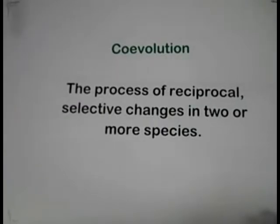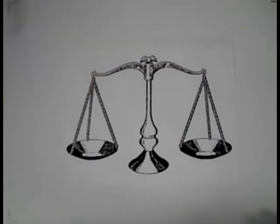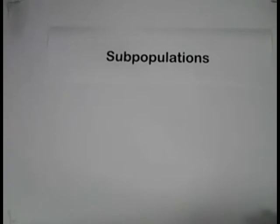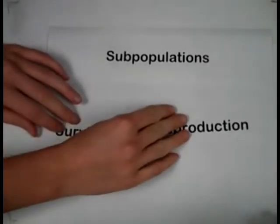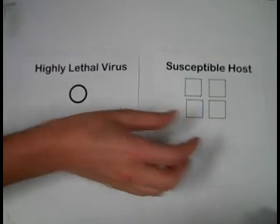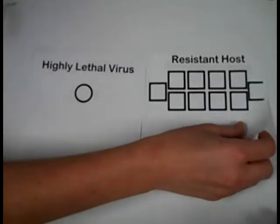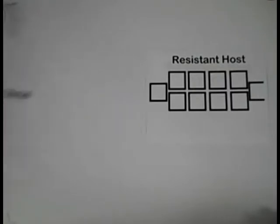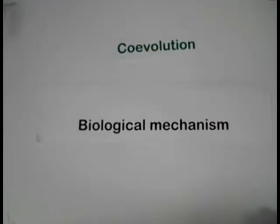What is co-evolution? It is a process of reciprocal selected changes in two or more species. In other words, co-evolution balances the relationship between two different species by selecting for subpopulations that have the best traits for survival and reproduction. For instance, a highly lethal virus would not survive if it killed its susceptible hosts too quickly. A continual supply of somewhat resistant hosts is necessary in order for the virus to remain alive longer, but this requires a change in both the host and virus populations. Co-evolution is a biological mechanism that addresses this dilemma of survival.